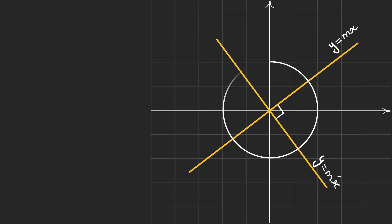There is another way we can prove this by using a circle. Look at the circle — no matter what, we are just looking for some right triangles because they're very useful. In the previous video, I talked about run and rise. You can see that in this blue triangle, the run is A and the rise is B.